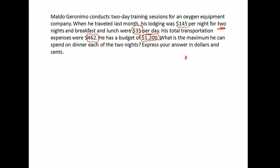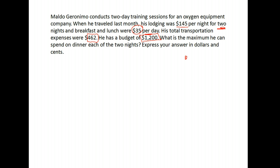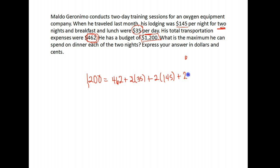Let's lay out what we know. His budget is $1,200. His transportation expenses were $462. He had lunch both days at $35 per day — that's 2 lunches. He stayed 2 nights at $145 a night. He also had dinner twice. I'm going to write that as 2d, because the question asks what's the maximum he can spend on dinner each night, and d is the price of dinner.